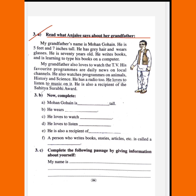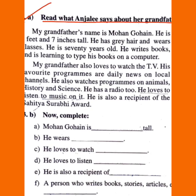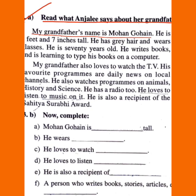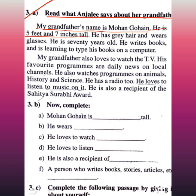Read what Anjali says about her grandfather. My grandfather's name is Mohan Gohai. He is five feet and seven inches tall. He has gray hair and wears glasses. He is seventy years old. He writes books and is learning to type his books on a computer.